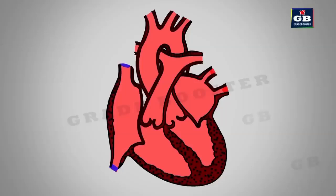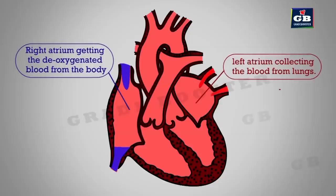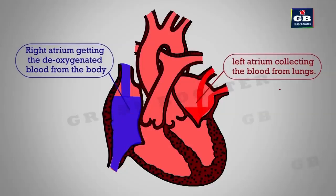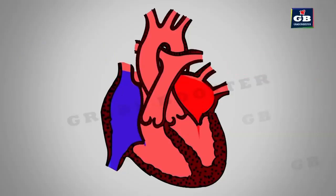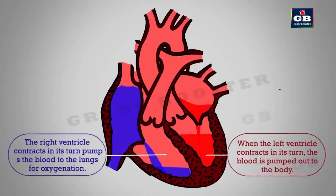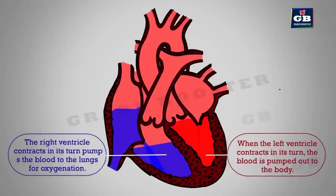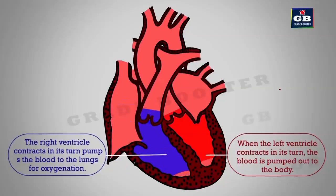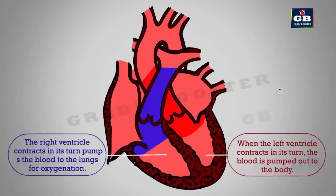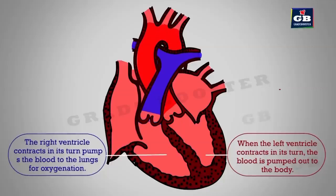First, the left atrium and right atrium get relaxed. Then the left atrium receives oxygenated blood from the lungs and the right atrium receives deoxygenated blood from the body parts. Both chambers contract and pump blood into the bottom chambers. The left ventricle contracts and sends oxygenated blood to the body parts, while the right ventricle pumps deoxygenated blood into the lungs.